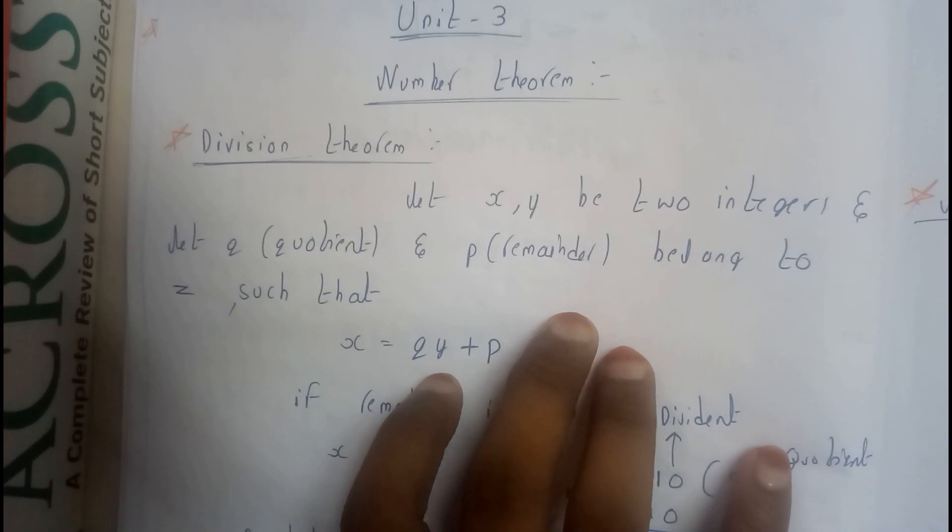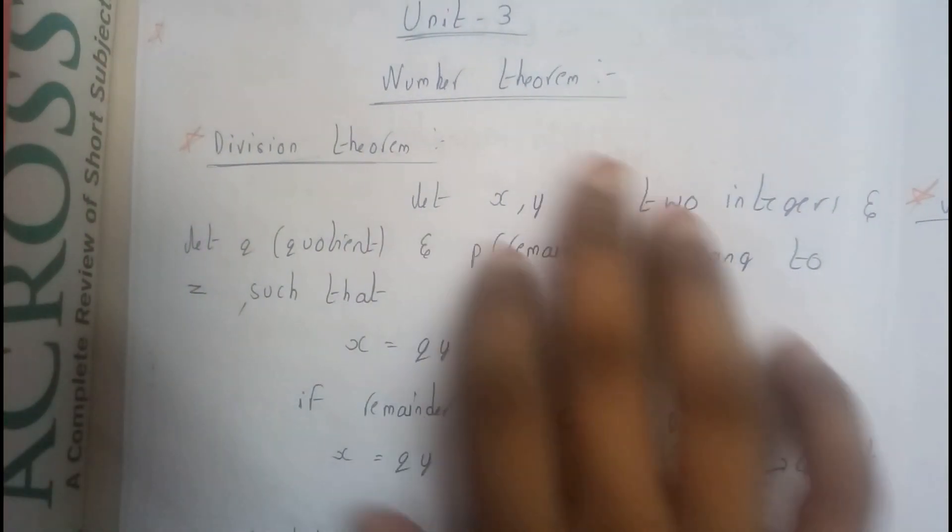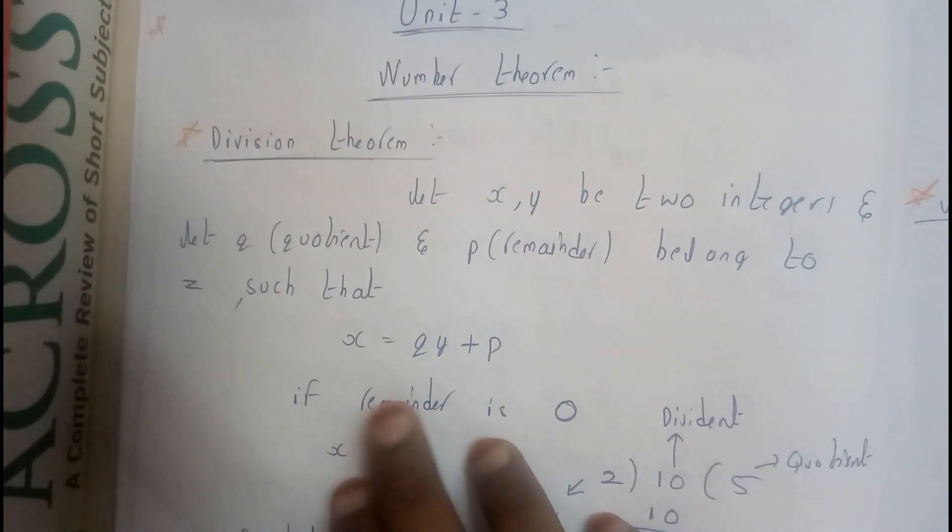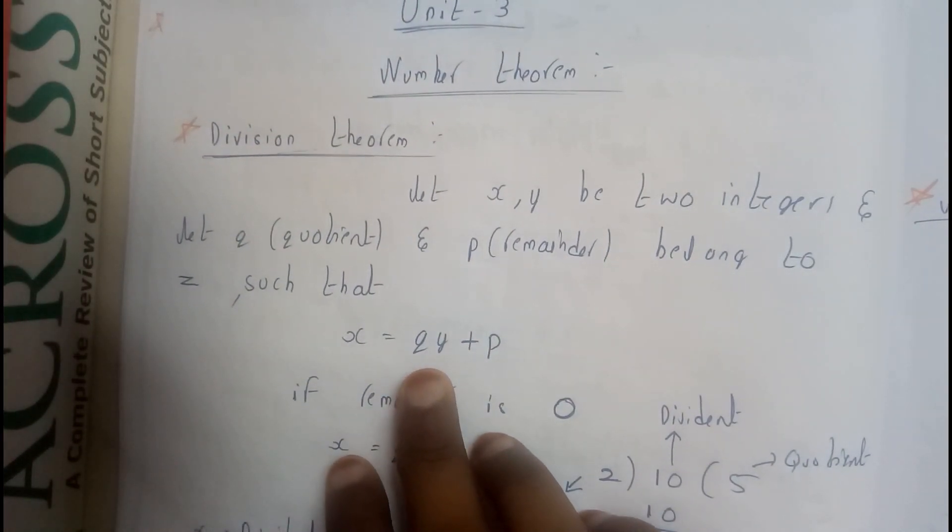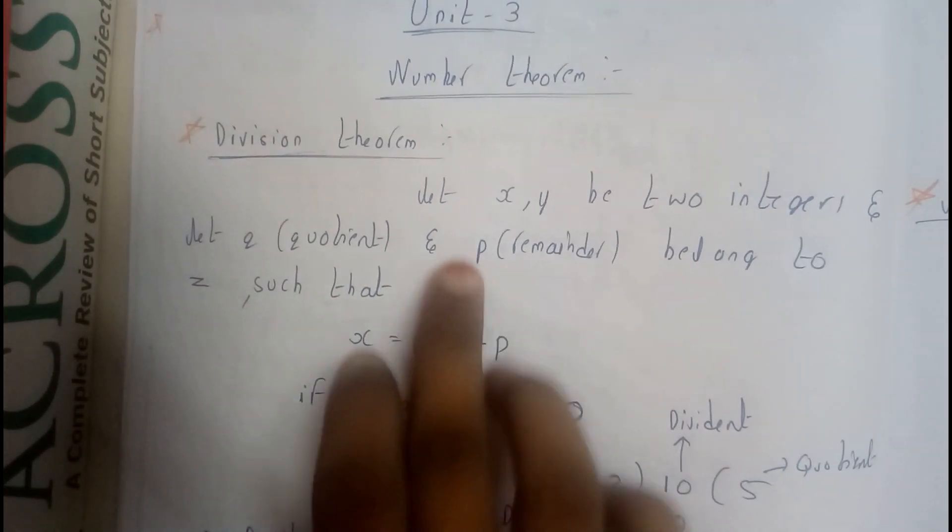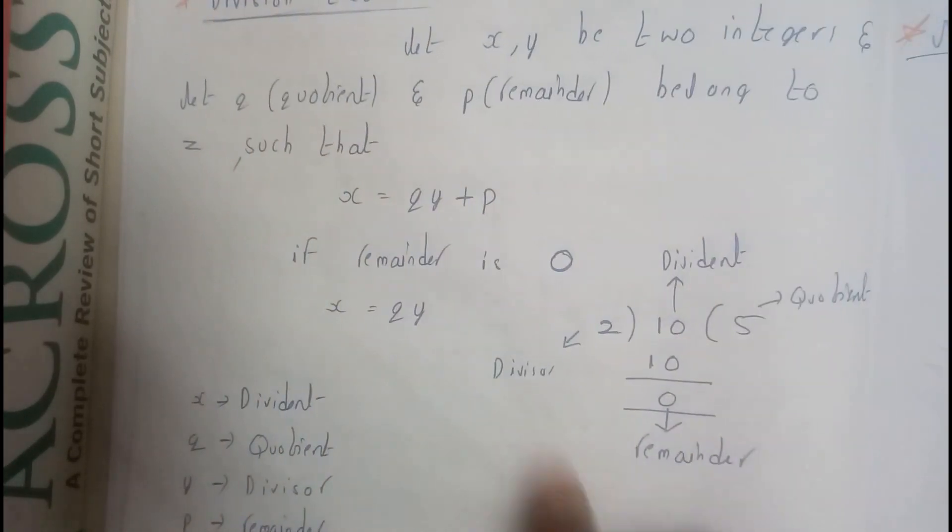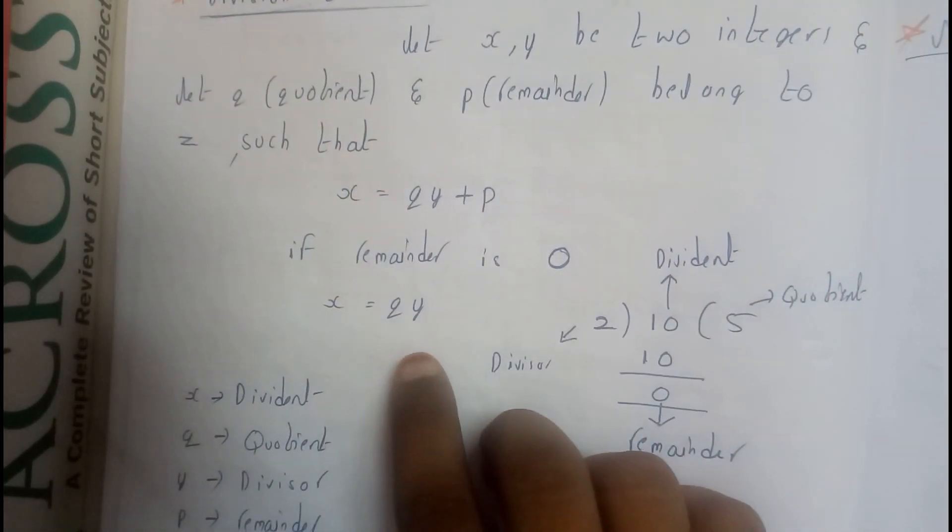These all belong to integers such that x equals some quotient q into y plus p. Yes, this is a true statement guys. This is what we call the division theorem. So if remainder is 0, x equals q y. That's true.